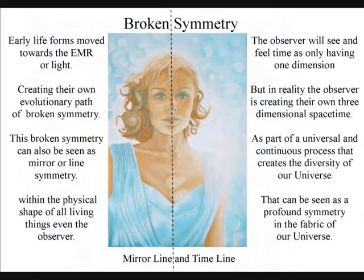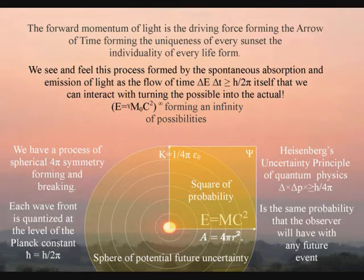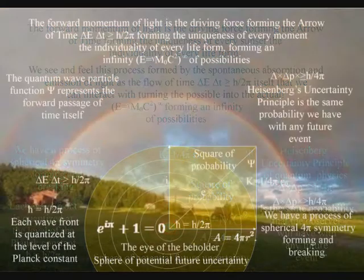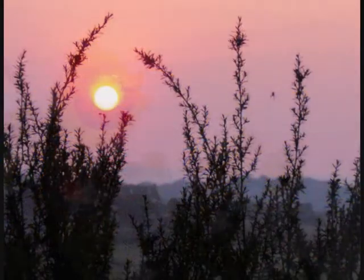The uniqueness of every life-form, of every sunset, of every moment, can only be created out of a potential infinity of possibilities. Because it is an infinity, everything is unique, and our whole universe is only relative to each individual object or observer.